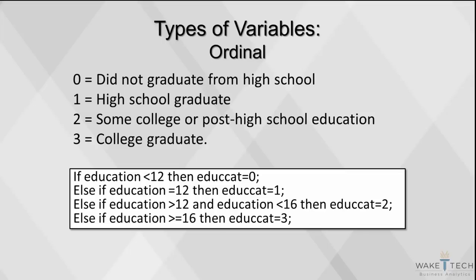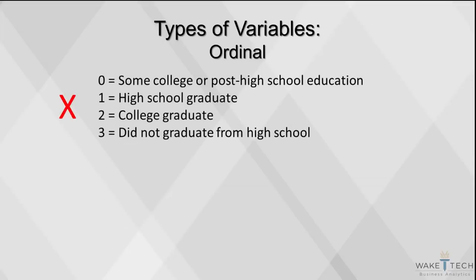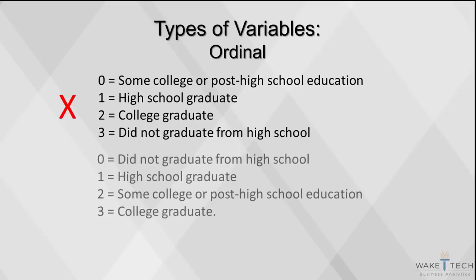Here's an example of what not to do: 0 equals some college or post high school education, 1 equals high school graduate, 2 equals college graduate, and 3 equals did not graduate from high school. The data we're trying to code has an inherent order, but the coding in this example does not follow that order.